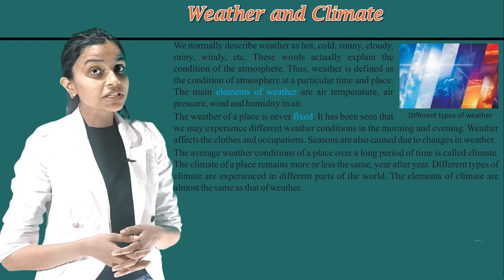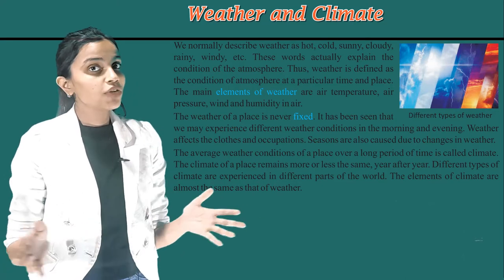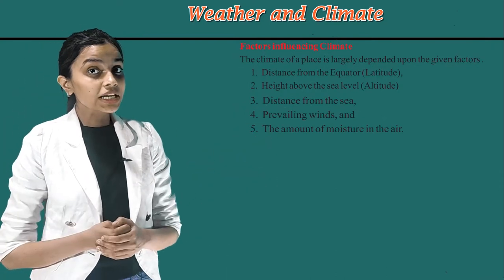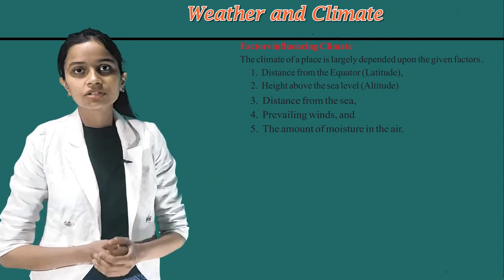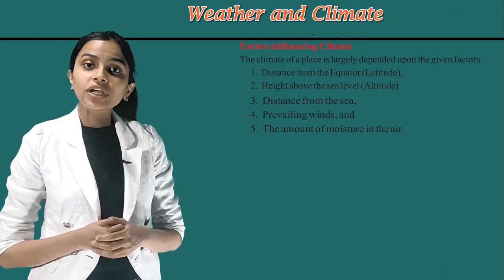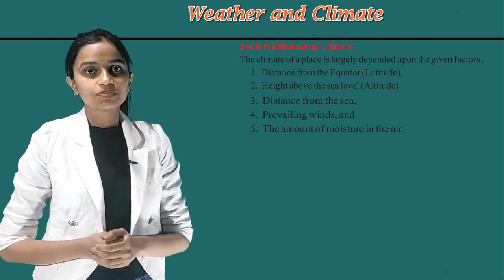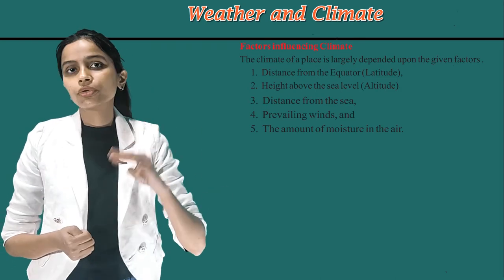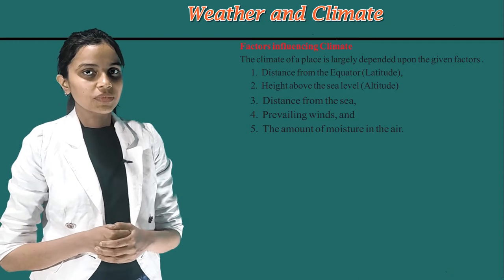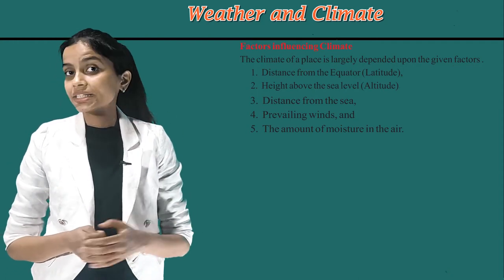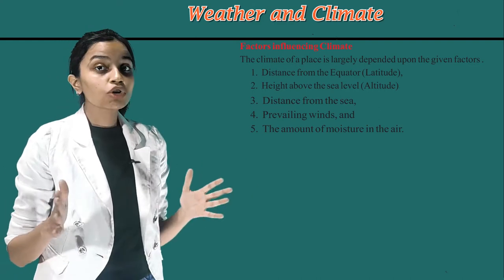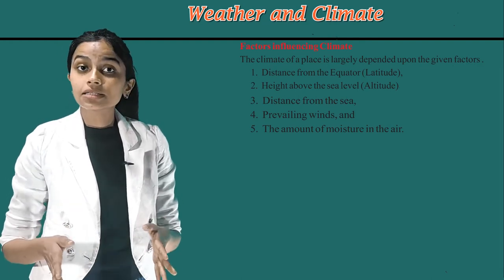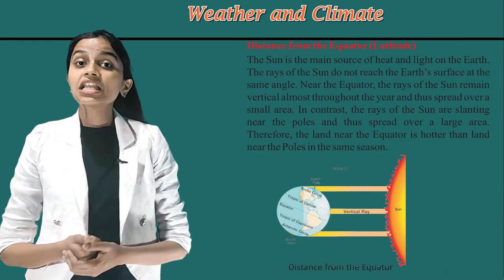Different types of climate are experienced in different parts of the world. The elements of climate are almost the same as that of weather. Now, factors influencing climate. The climate of a place is largely dependent upon the given factors: 1. Distance from the equator, that is latitude. 2. Height above the sea level, that is altitude. 3. Distance from the sea. 4. Prevailing winds. 5. The amount of moisture in the air. Now, factor number 1 is distance from the equator, that is latitude.